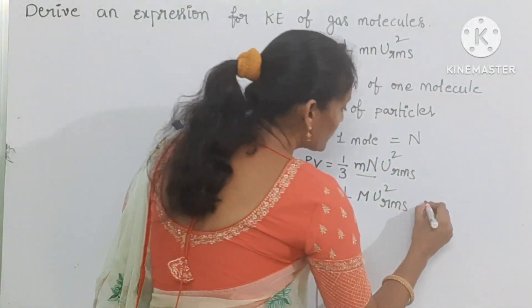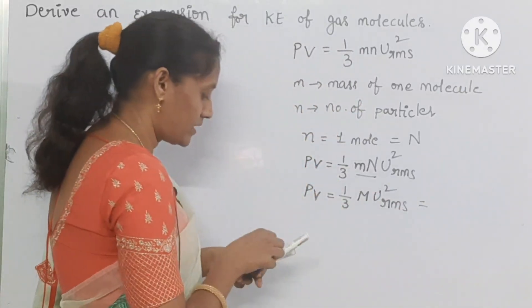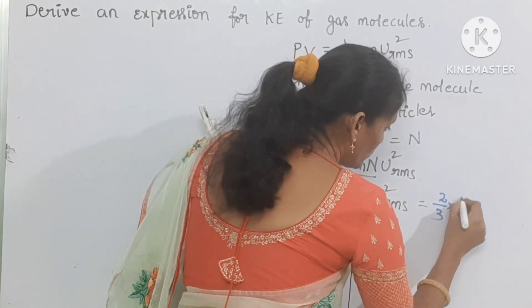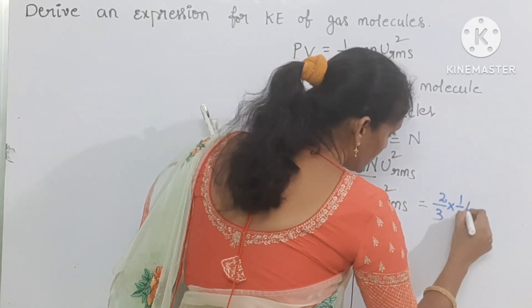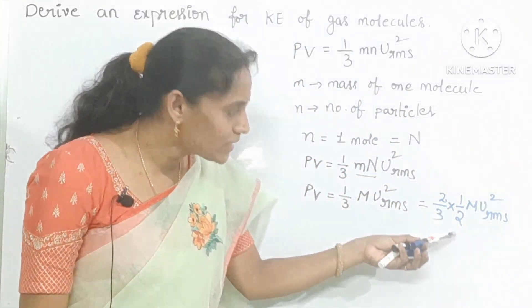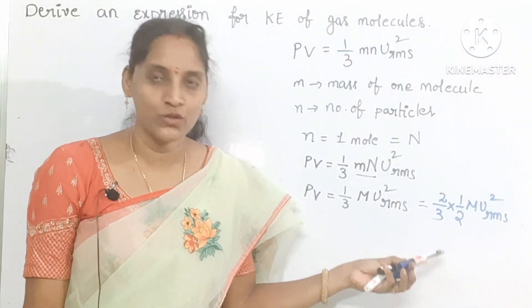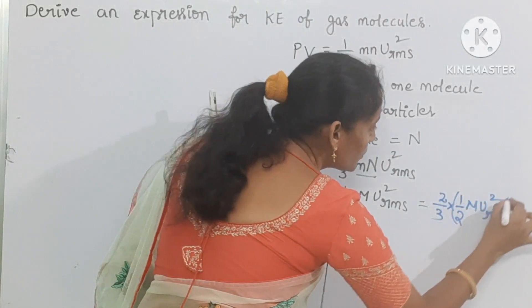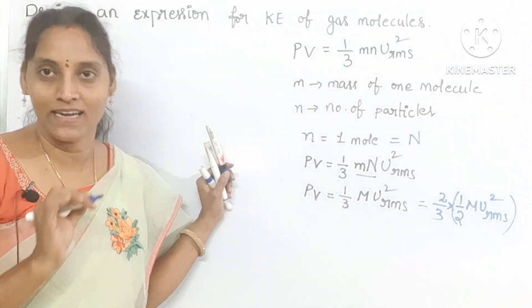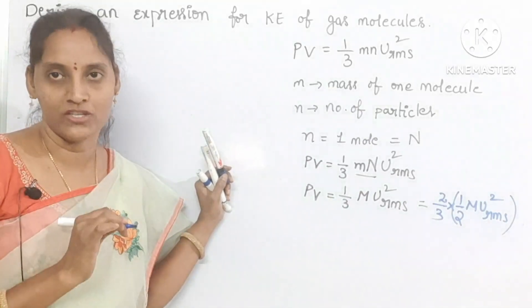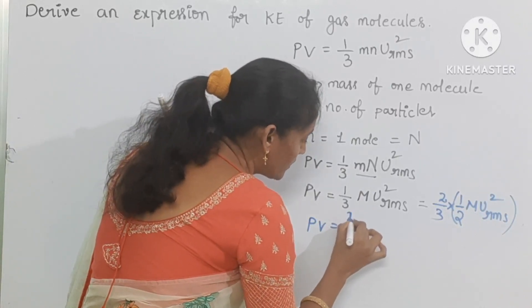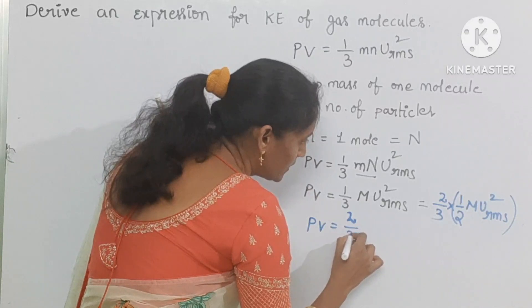This equation we can also write like this. PV equal to 2 by 3 into 1 by 2 M U_rms squared. I just multiplied with 2 by 2. This part, 1 by 2 M U_rms squared, you can write as E_K — that is kinetic energy. So PV equal to 2 by 3 E_K.